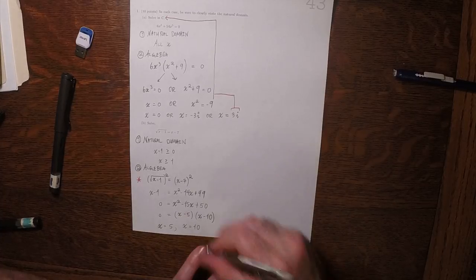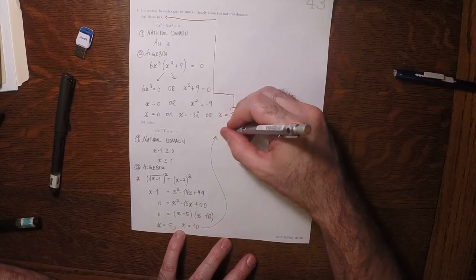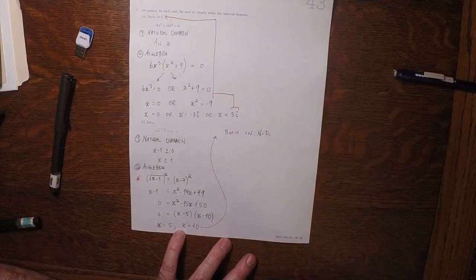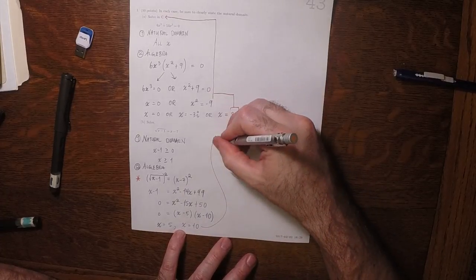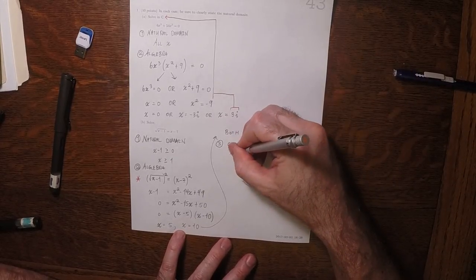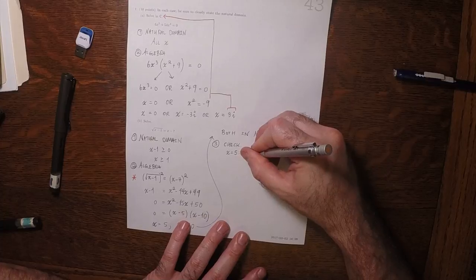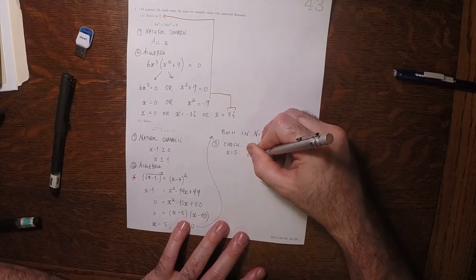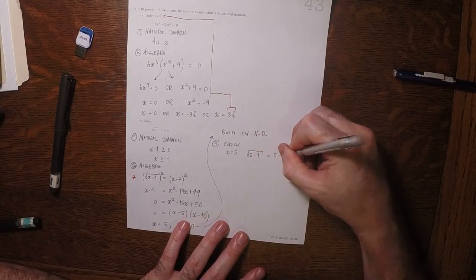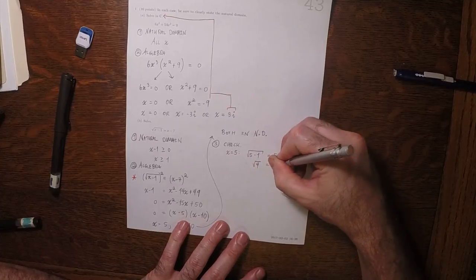They're both in the natural domain, so that's good. But now we need to check the original equation. I'll check x equals 5. That gives the square root of 5 minus 1 equals 5 minus 7. So the square root of 4 equals negative 2.